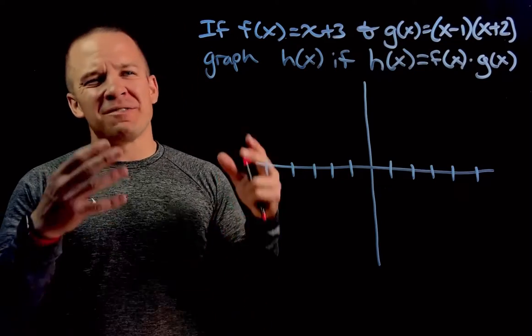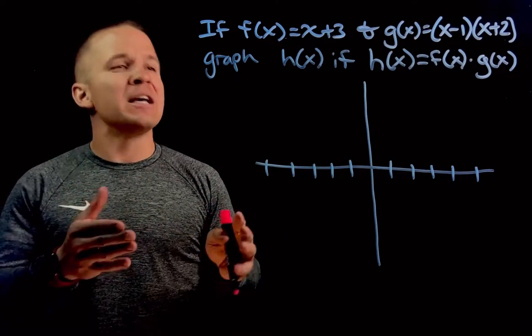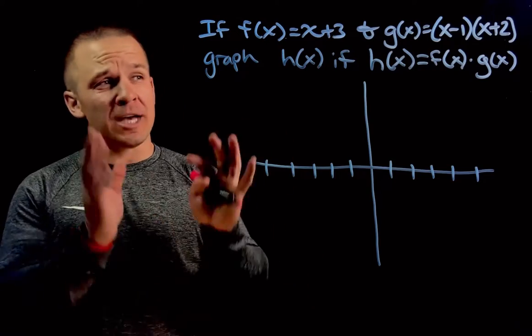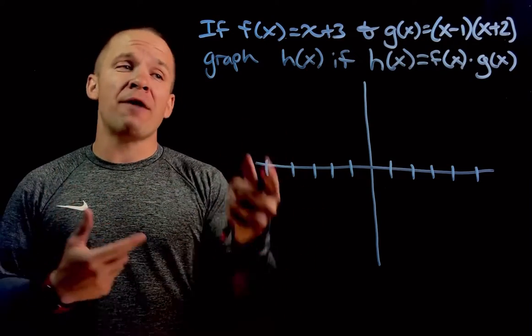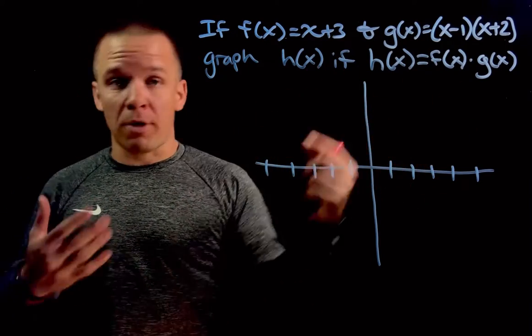What's popping dogs? Mr. Allen here. We got ourselves a nice little problem here. If f of x equals x plus 3 and g of x equals x minus 1 times x plus 2, graph h of x if h of x is the product of those two.